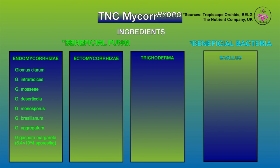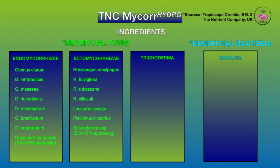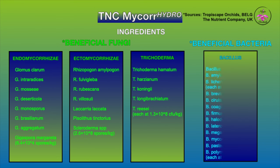Then there are the trichoderma fungi, of which TNC Microhydro has five variants. Trichoderma can not only prevent diseases but also promotes plant growth — it improves nutrient utilization efficiency and enhances plant resistance. They will not only destroy unwanted organisms, they will induce and increase the host plant's resistance to pathogens, mold, and undesirable fungi, not only in the plant's root system but throughout the structure of the plant. TNC Microhydro also includes 13 bacillus bacteria in total — for nitrogen fixing, phosphorus solubilizing, and growth promotion.